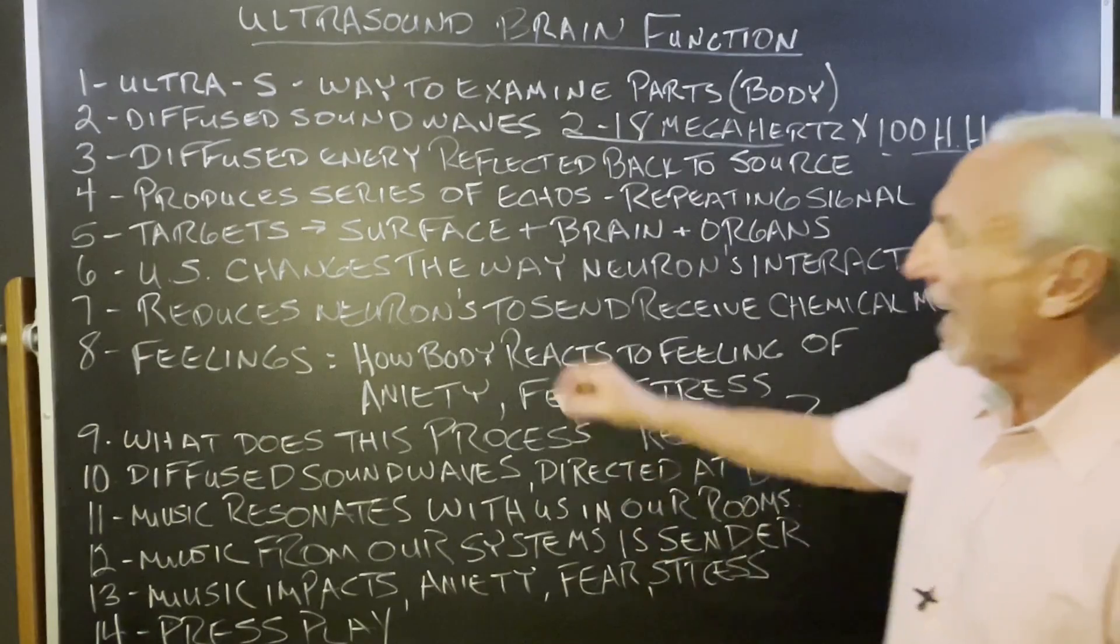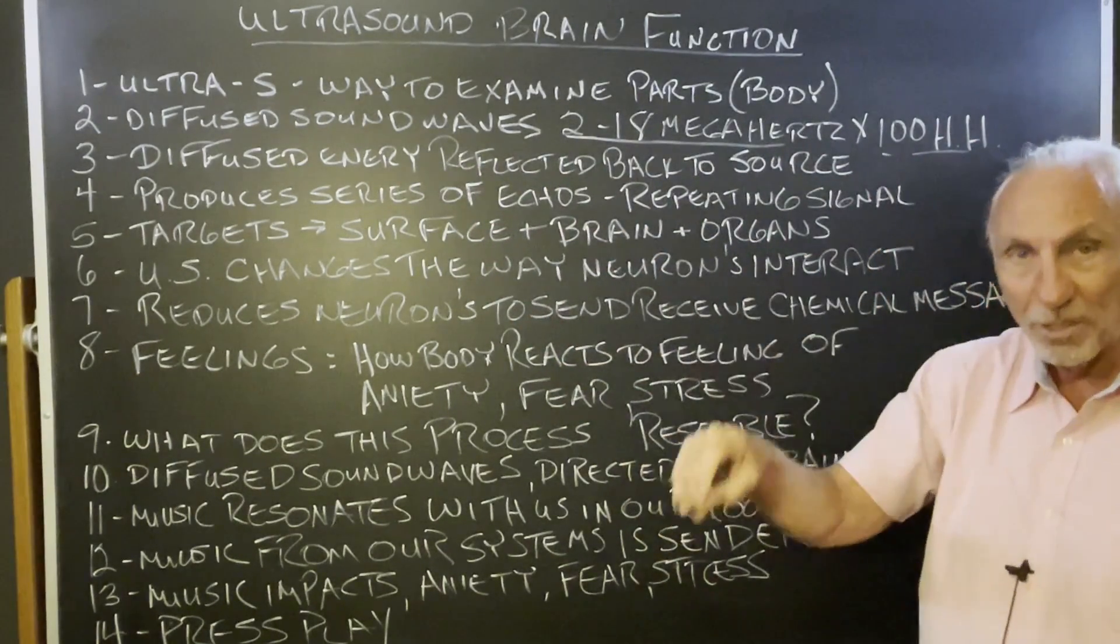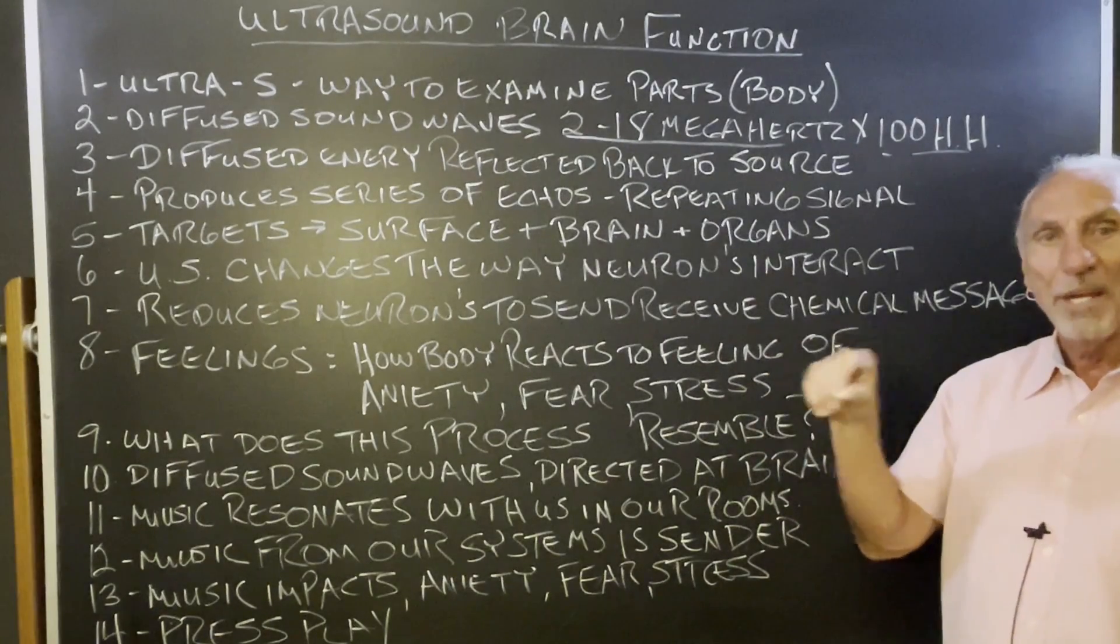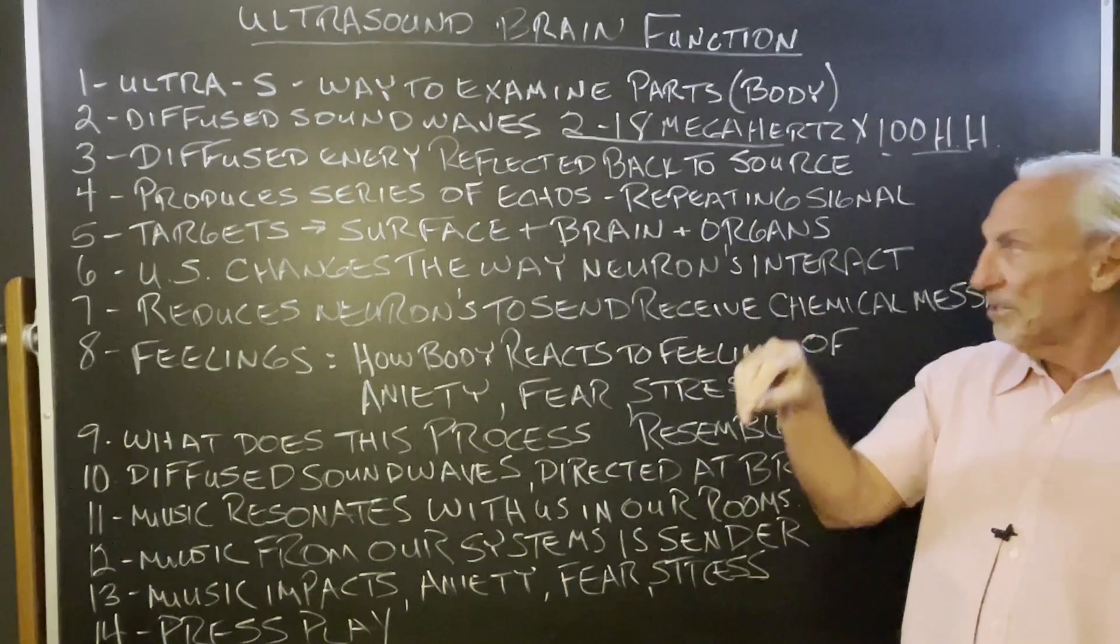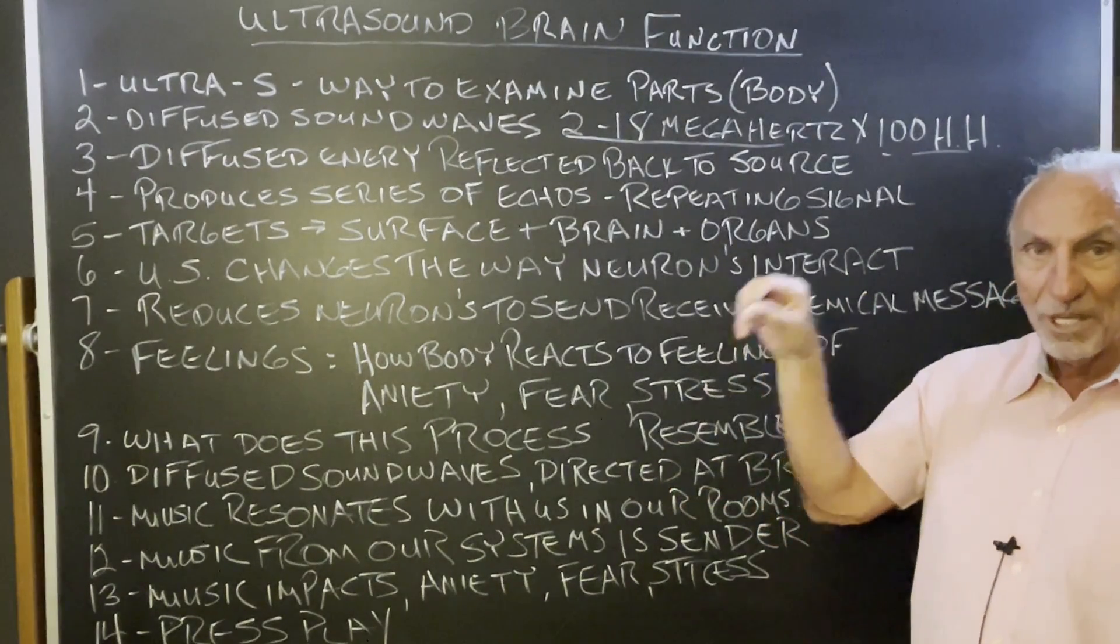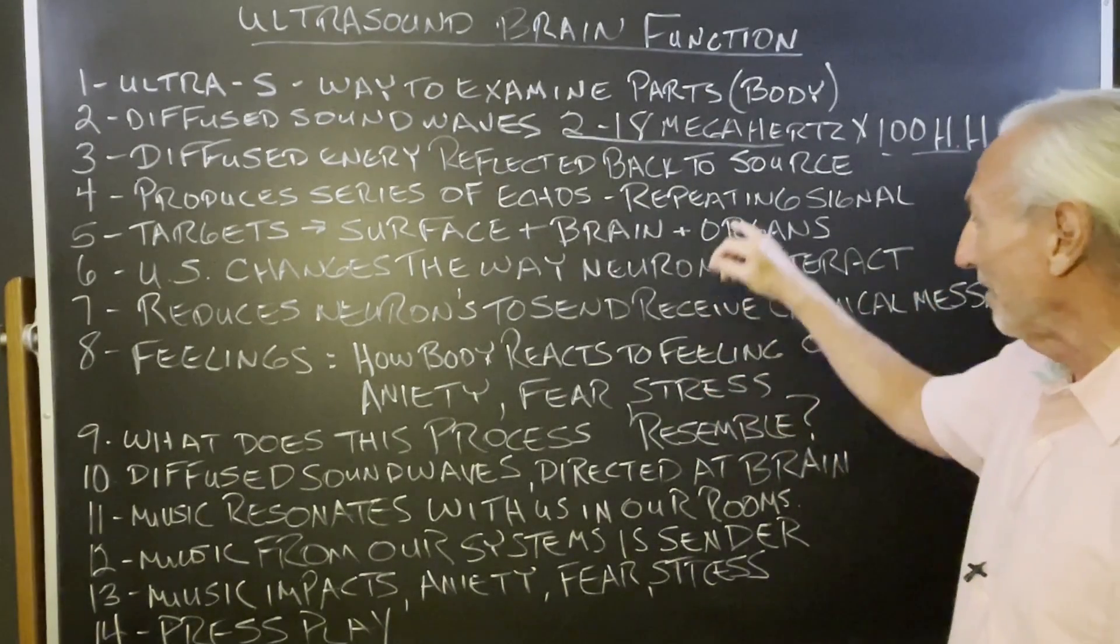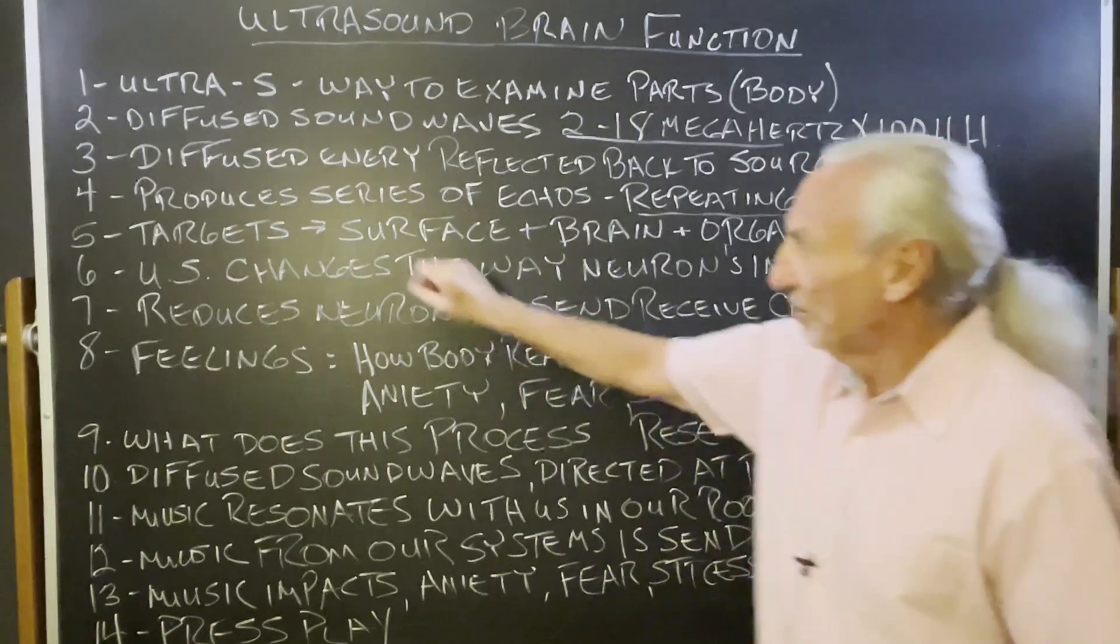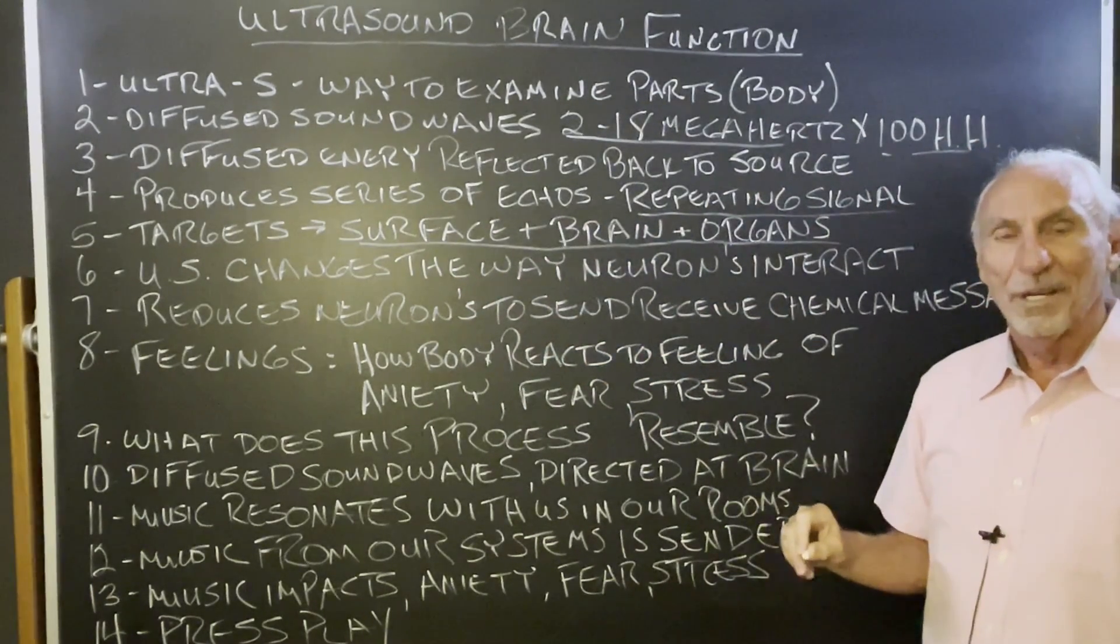So how does it work? Diffused energy is reflected back to a source. So you've got the source, the ultrasound. You always see when women are pregnant and they put the transmitter on their belly - so that's the transmitter. And then it transmits diffused energy and it repeats in signal and then comes back. So target areas, surface, brain, and the organs, obviously.